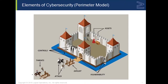Here we're going to take a look at the elements of cybersecurity, and this is the older or legacy perimeter model. Let's talk about some of the terms we have here. First we have our assets — anything of value inside our organization. And we notice on the outside, right outside of the castle walls, we have the threats — anything that can cause damage to our assets should they try to attack. We define an attack as a deliberate attempt to gain access to our assets.